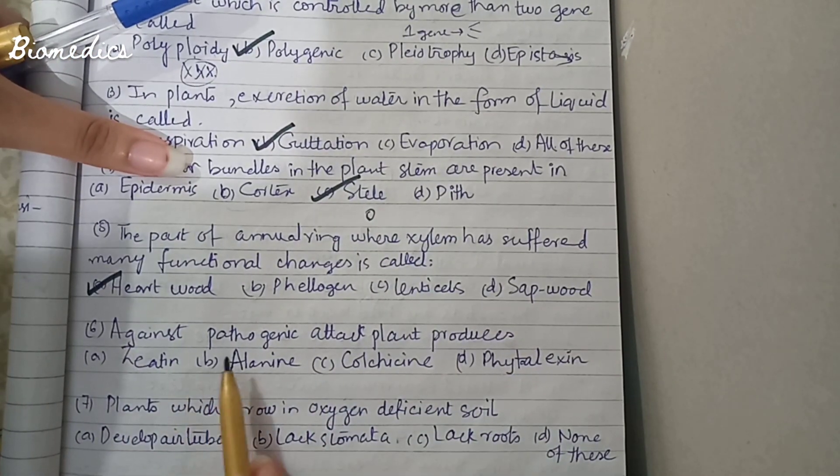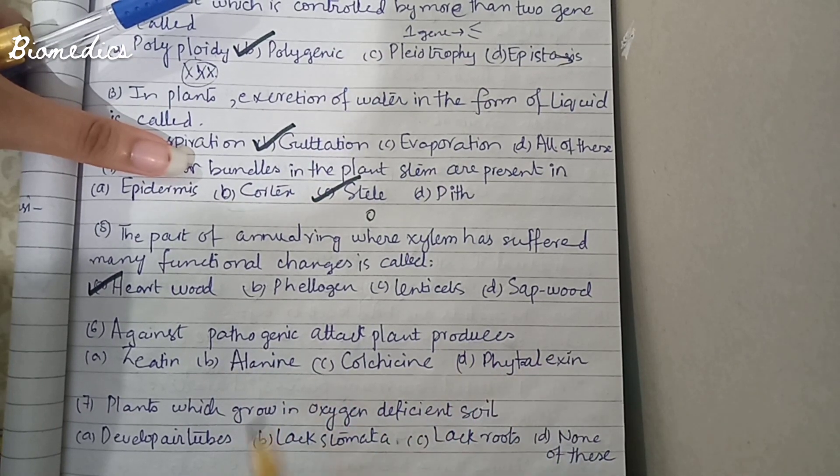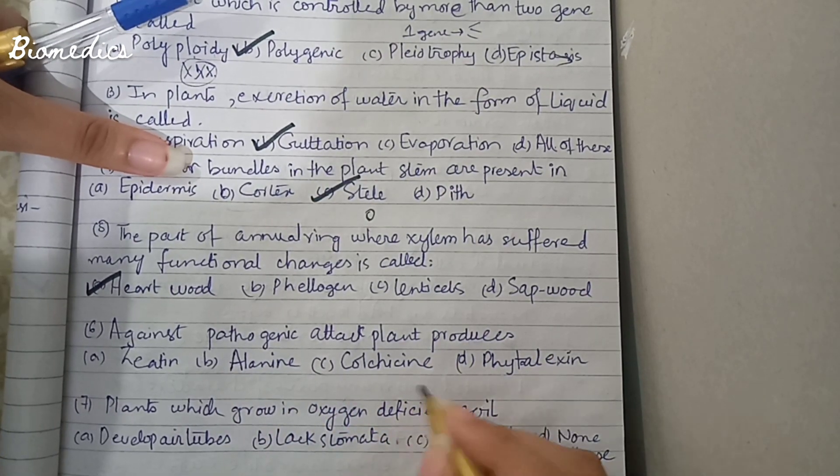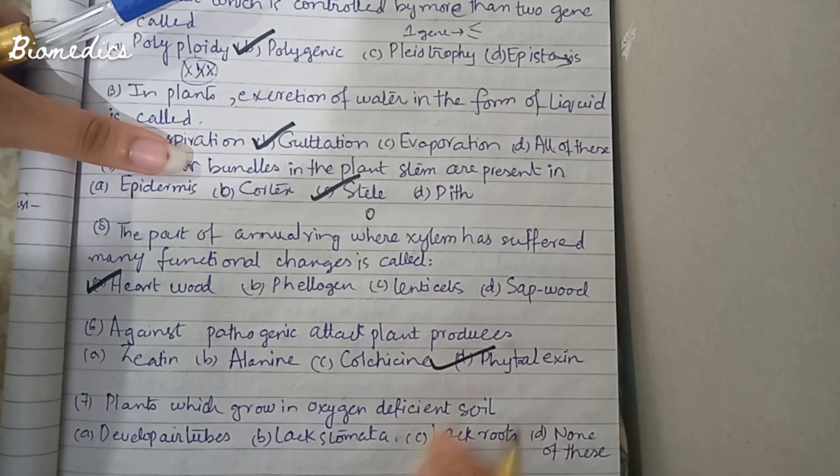Against pathogenic attack, the plant produces phytoalexin. Phytoalexin is the chemical defense compound produced by plants in response to pathogen infection.